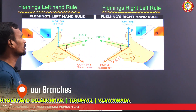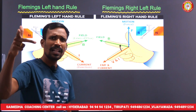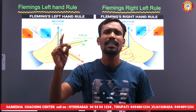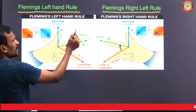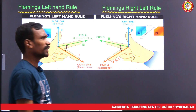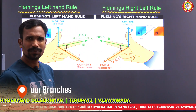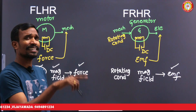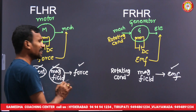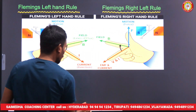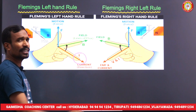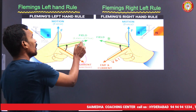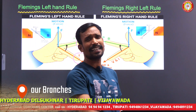For Fleming's left hand rule and right hand rule, three fingers each should be 90 degrees to each other. For the left hand rule, we use the thumb, forefinger, and middle finger. The middle finger indicates the current direction, and the forefinger indicates the magnetic flux or magnetic field direction.